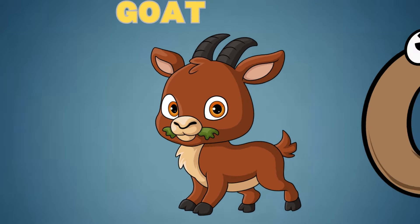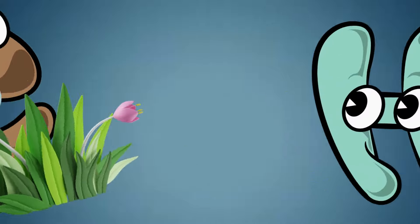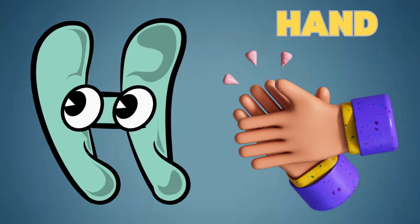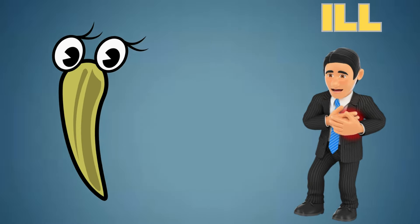G is for Goat. G is for Grass. H is for House. H is for Hand.